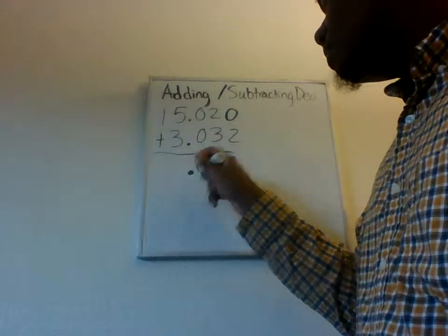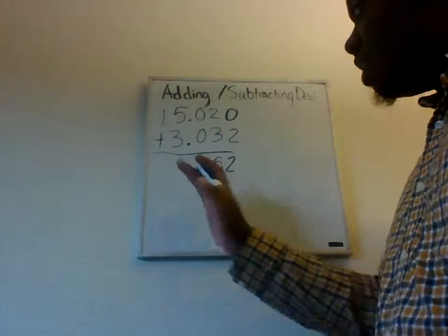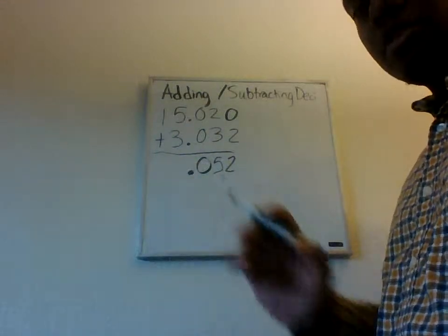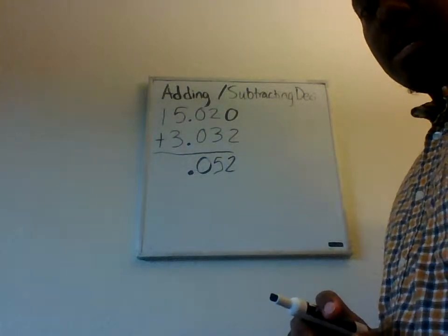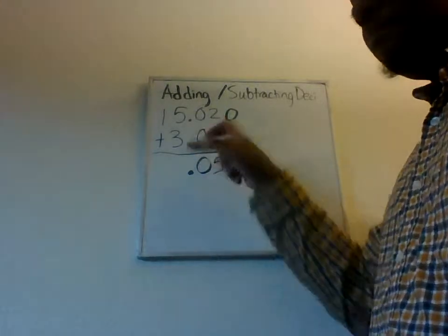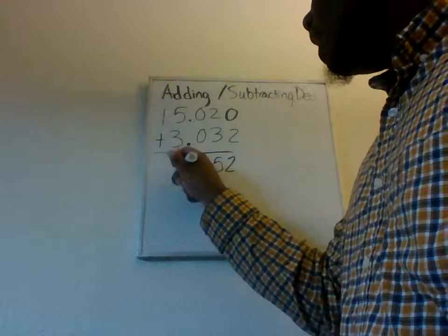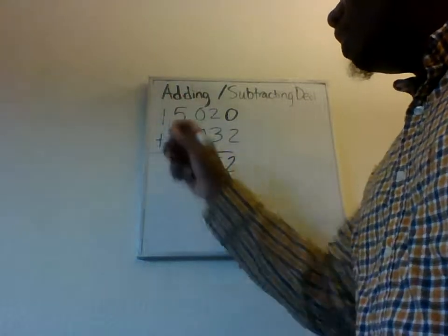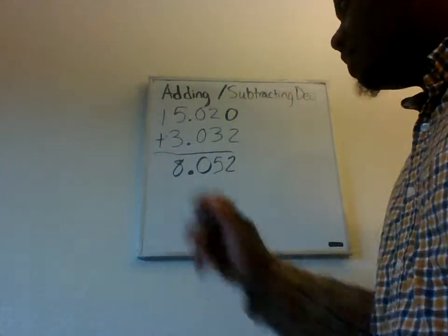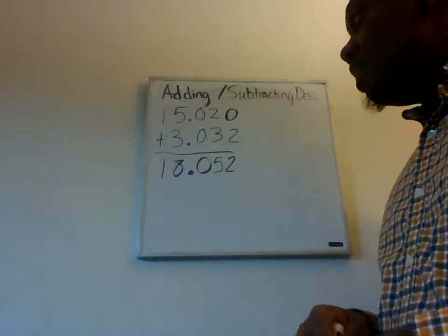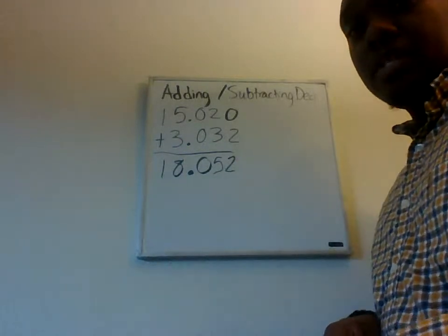The decimals are there, so we'll put our decimal. This also helps us keep track of where our decimal goes in our answer if we line them up properly. Last, we have five plus three, we get eight. And then one and no ten value there, so we can do one plus zero, and so that's going to be one. And so, we end up with 18.052.